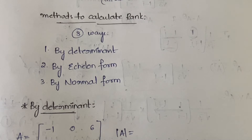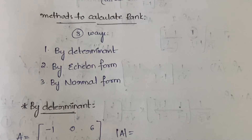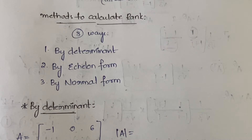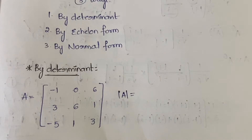The determinant method is a shortcut method. When you follow echelon form or normal form, at the end if you want to check whether the answer you got is correct or wrong, you can use the determinant just for checking — but don't use the determinant method in the exam. I'm telling you this for verification purposes only. In this video I'll explain how you calculate the rank using the determinant method; the next videos will cover echelon form and normal form.